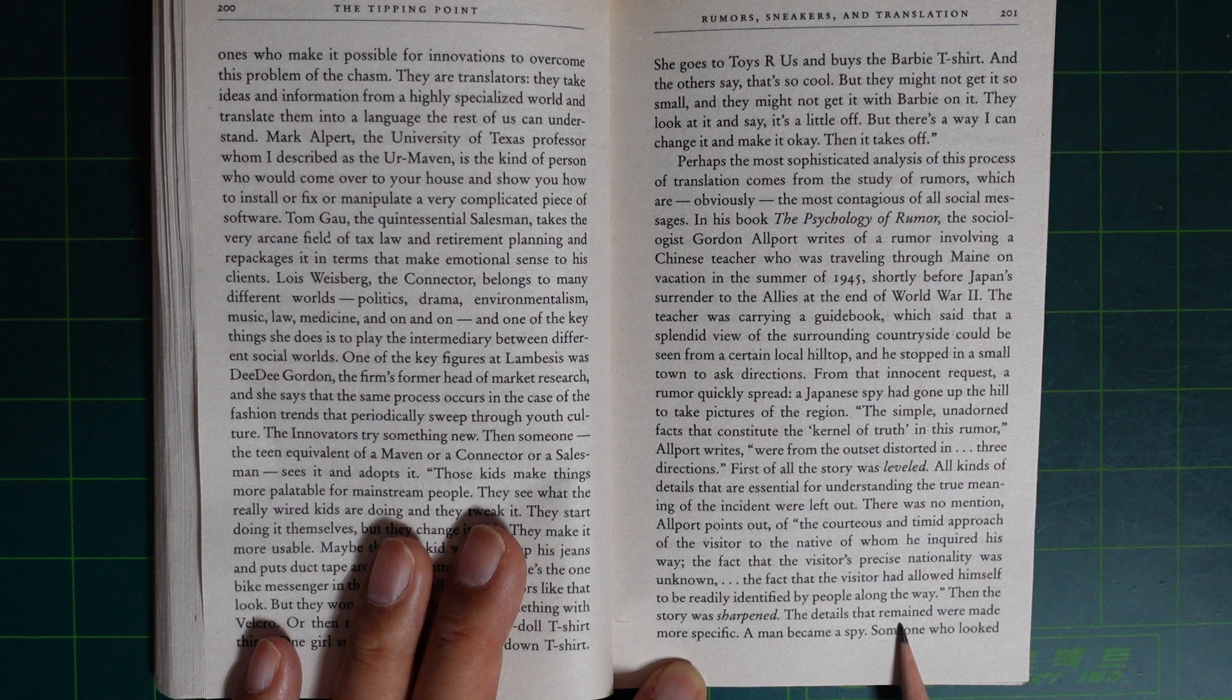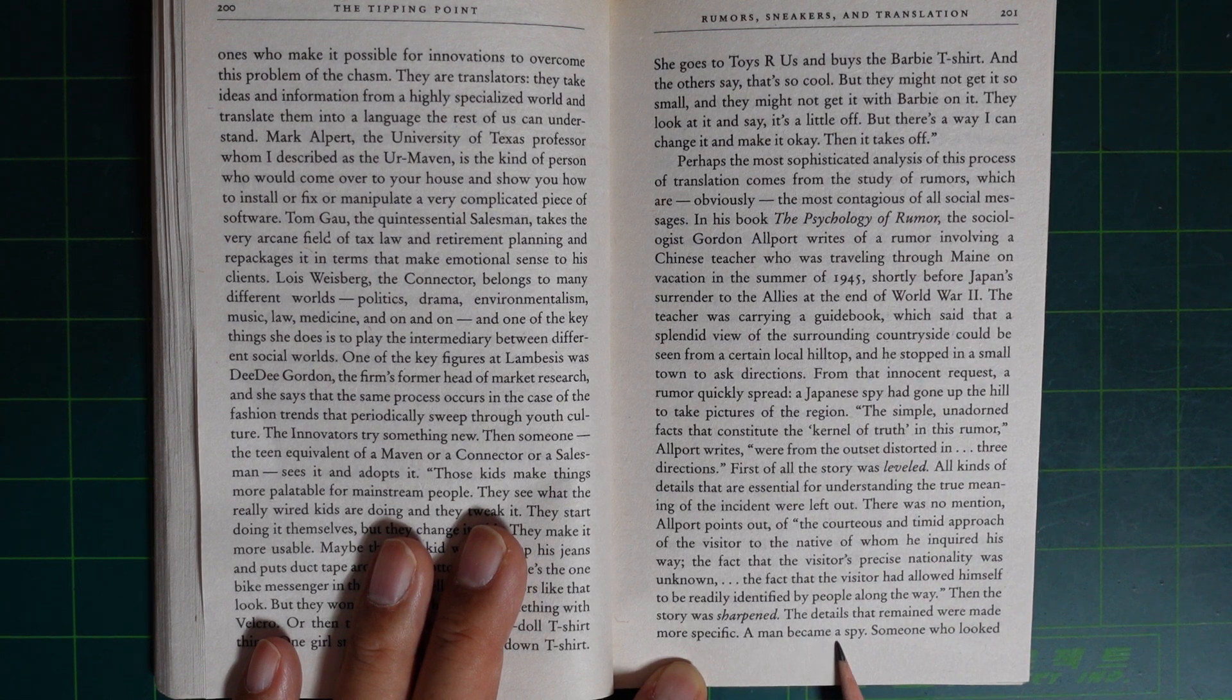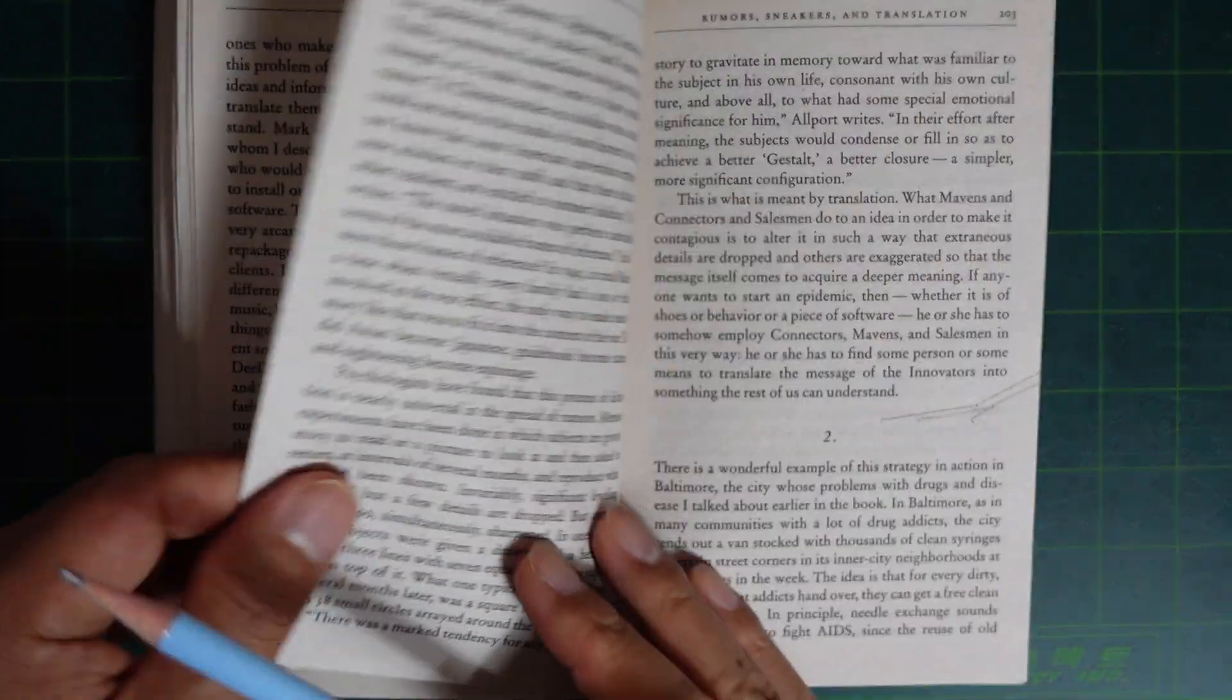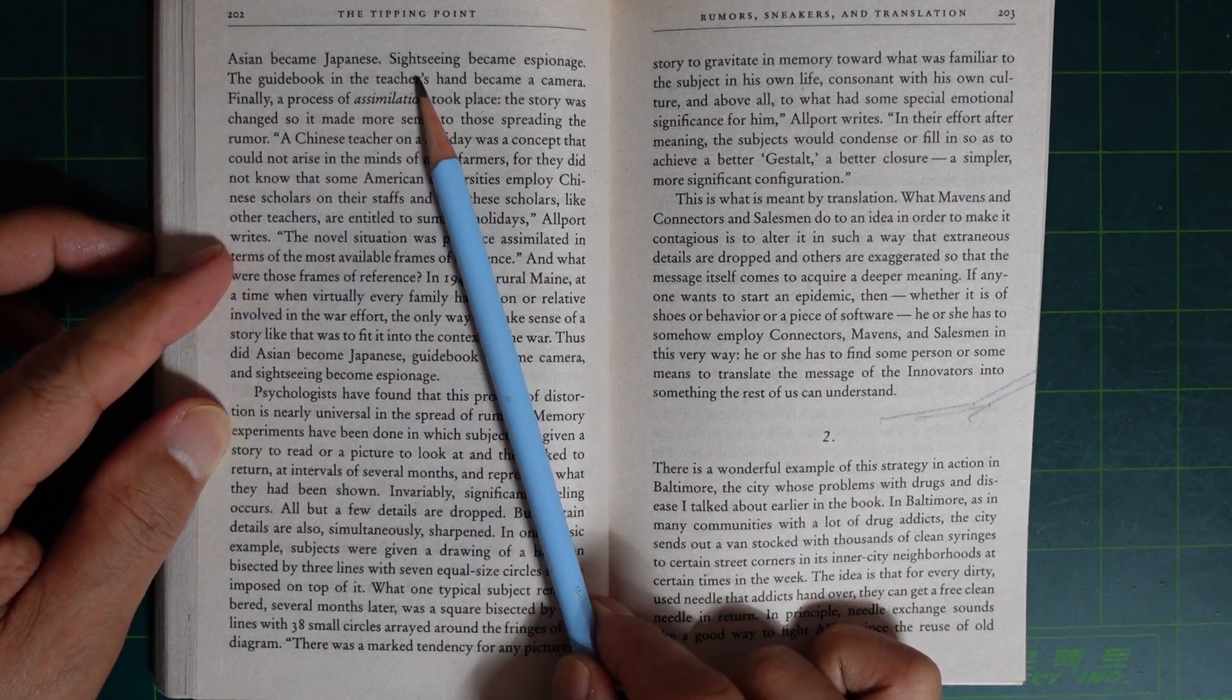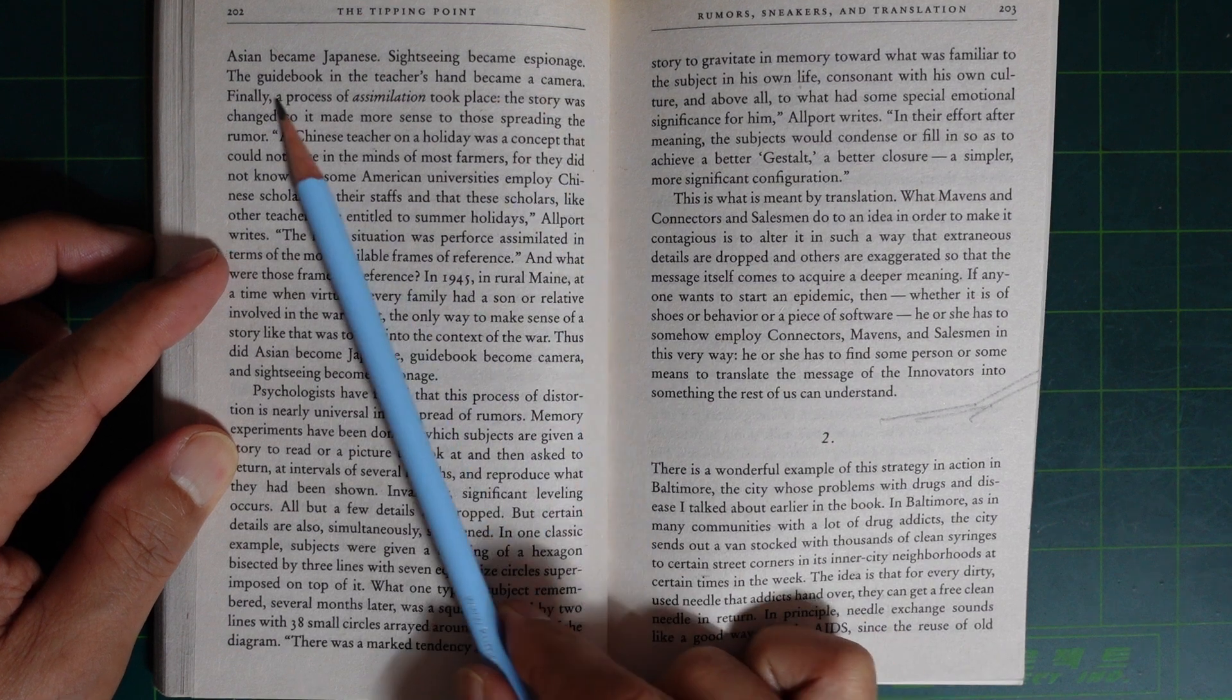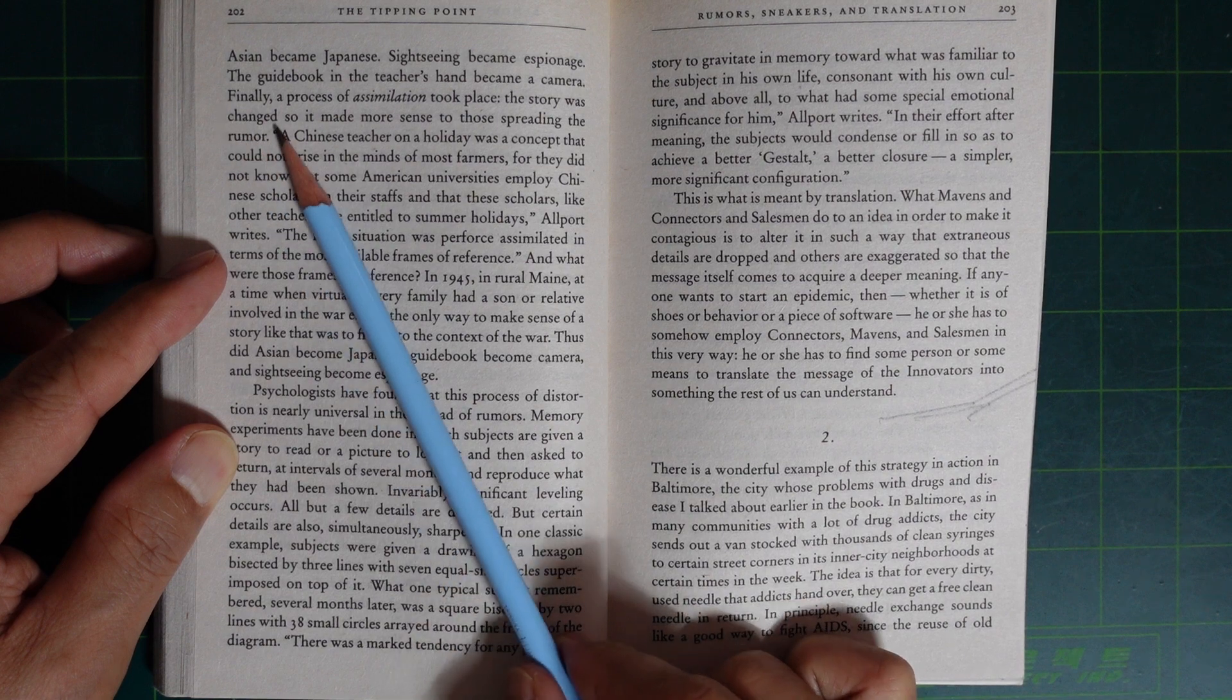The details that remained were made more specific. A man became a spy. Someone who looked Asian became Japanese. Sightseeing became espionage. The guidebook in the teacher's hand became a camera.